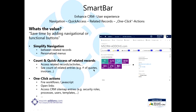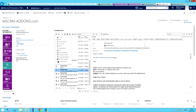You can access related records and activities quickly and see the count of all related entities. For example, looking at this screenshot, I can see really quickly that MSCRM add-ons.com — the account — has 59 activities associated with it, five contacts, and on and on. Some of the one-click actions include firing workflows or JavaScript straight out of a custom button in SmartBar. It allows you to open direct links and access CRM site map entries. It's really handy.